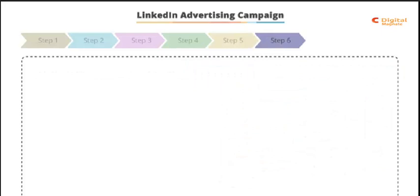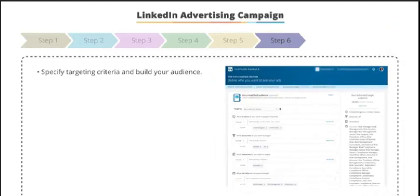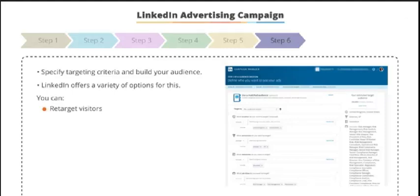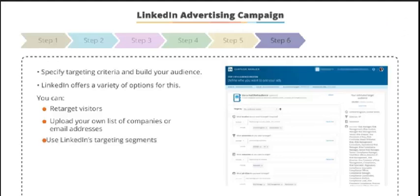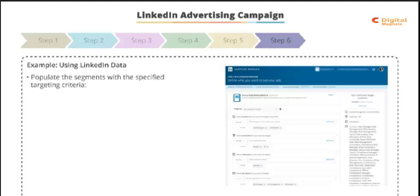Step six: the audience creation stage. This is where we'll start to specify our targeting criteria and build our audience. LinkedIn offers a variety of options here. We can either retarget visitors who have recently visited our site, upload our own list of companies or email addresses, or use LinkedIn's targeting segments. In this example, we're going to use LinkedIn's data, and begin to populate the segments with the targeting criteria we specified earlier.